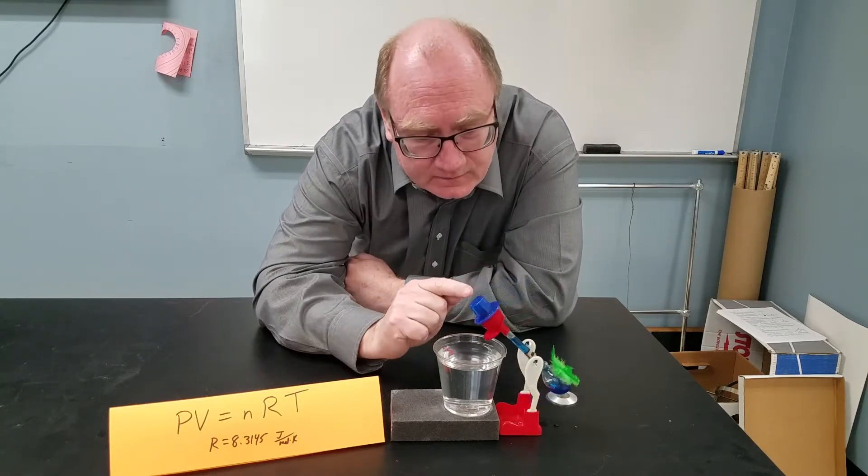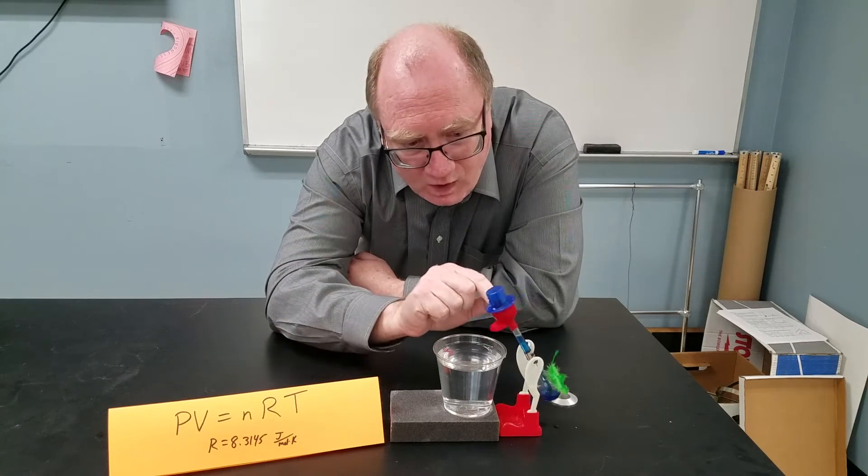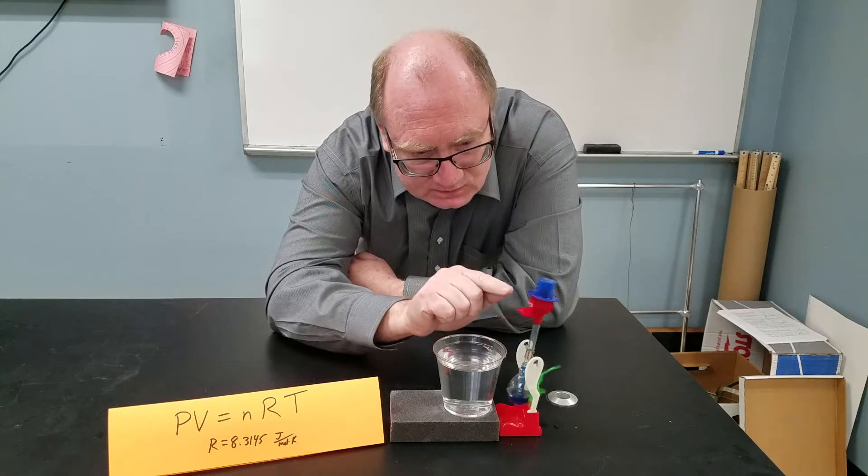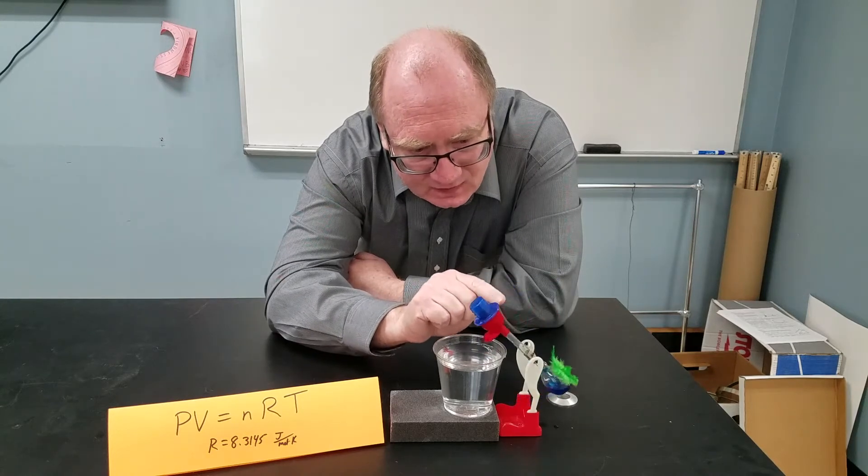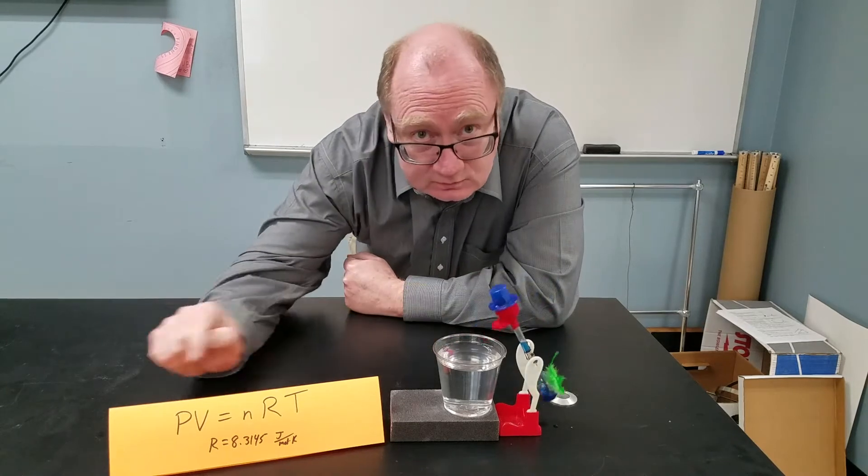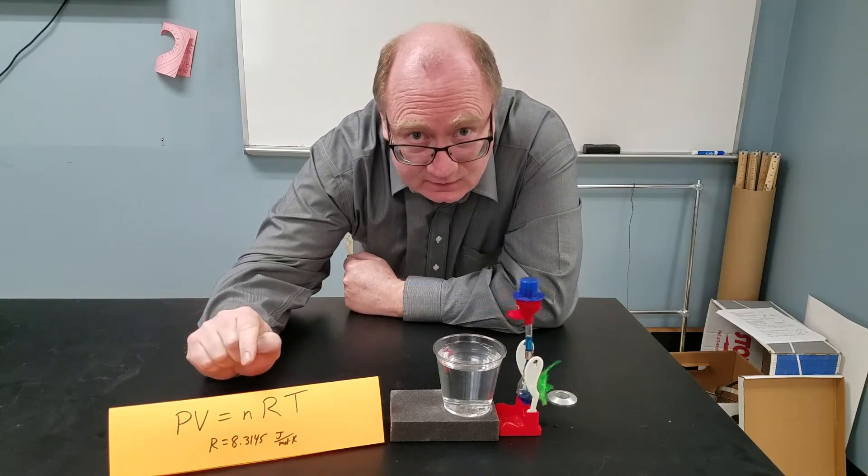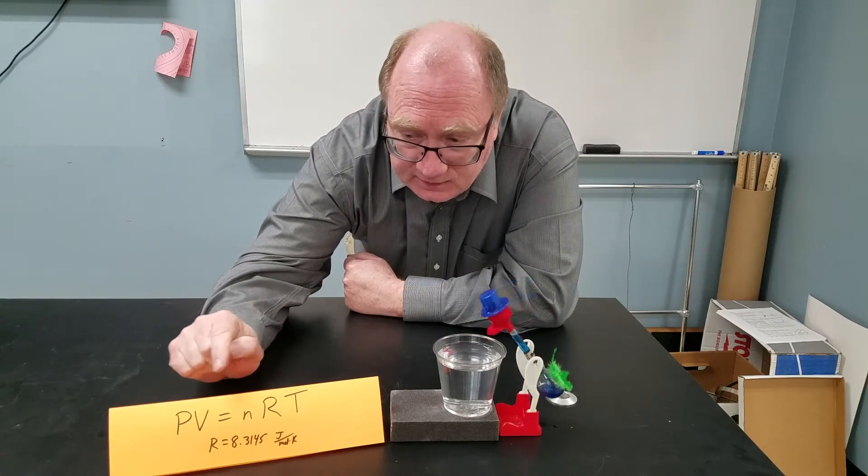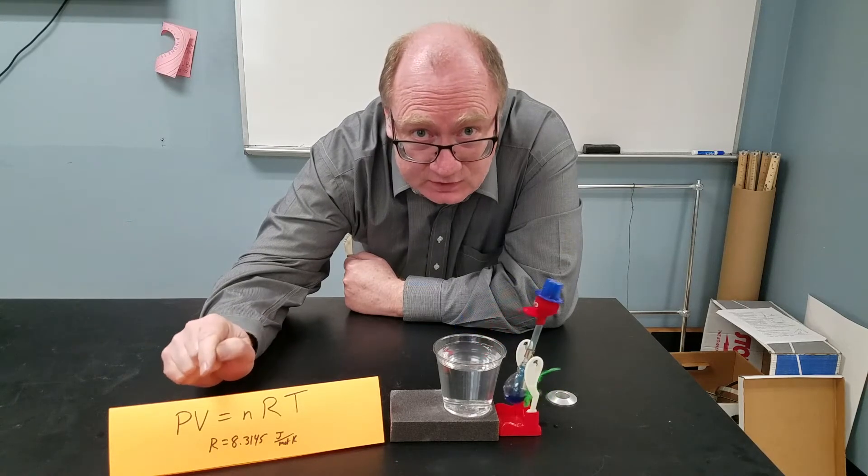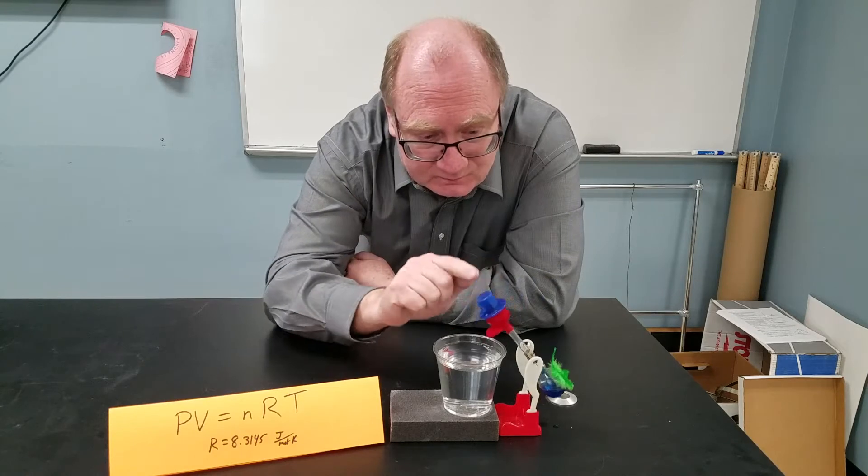First of all, as the bird moves the water evaporates off the top, and as it does it cools the bubble on the top. That causes the vapor on the inside to exert less pressure according to ideal gas law. So if the temperature goes down, then the pressure also goes down because we keep roughly the same volume.